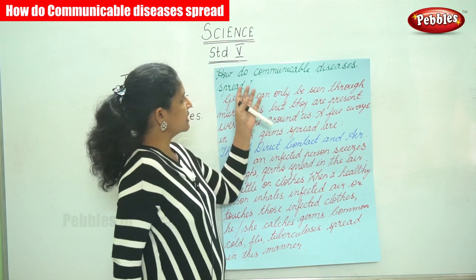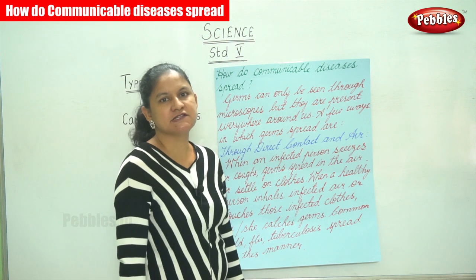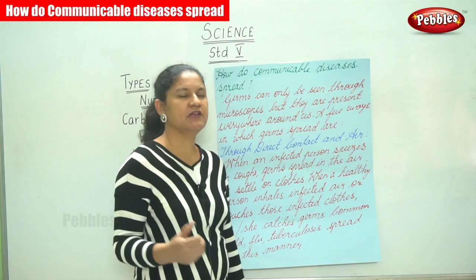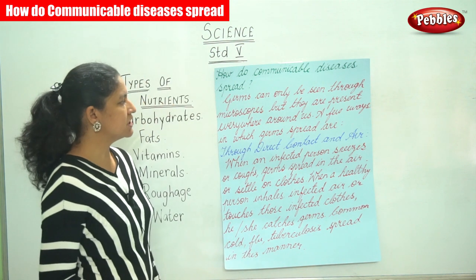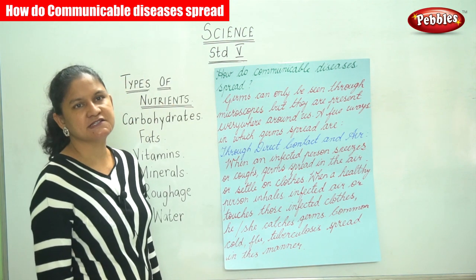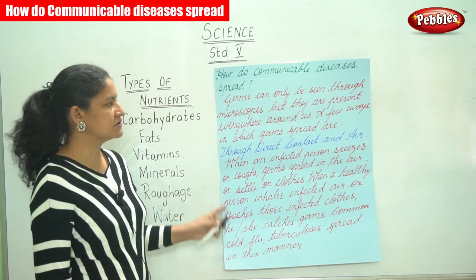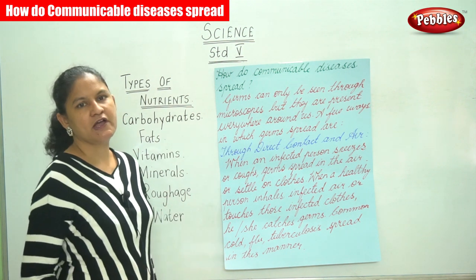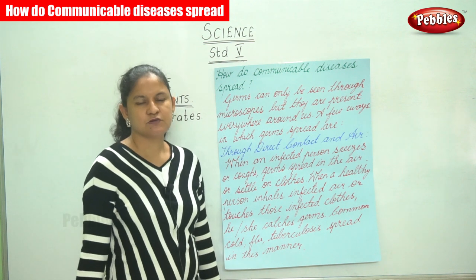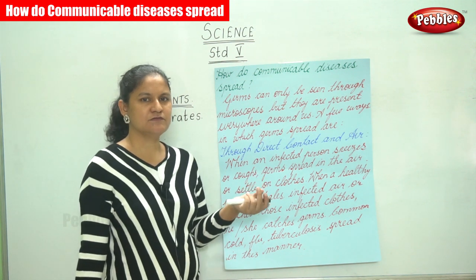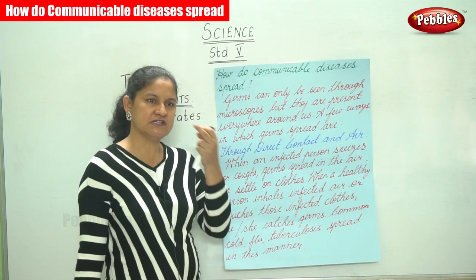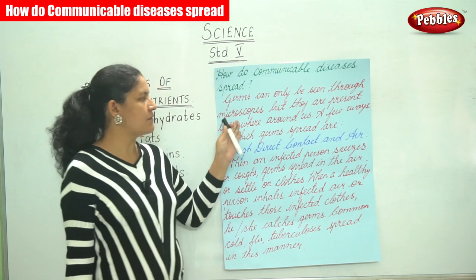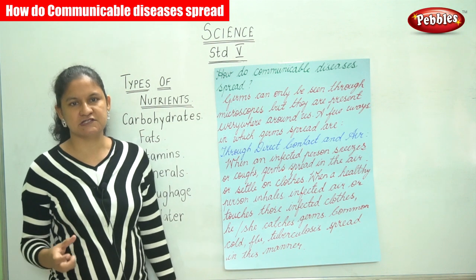Now we're going to see how communicable diseases spread — what causes the disease to be spread. Germs can only be seen through microscopes. The germs are very tiny microbes which cannot be seen with the naked eye; we need to use a microscope to view them.